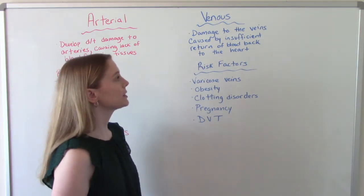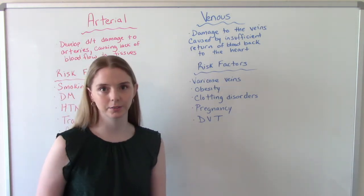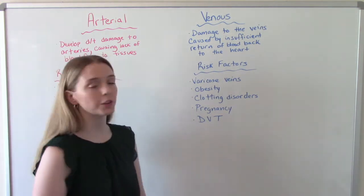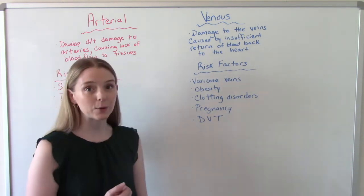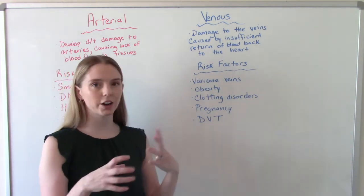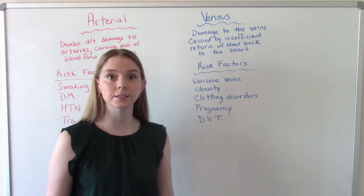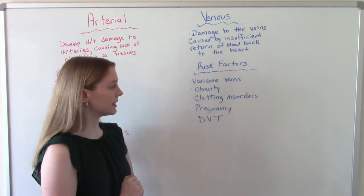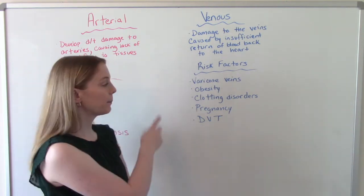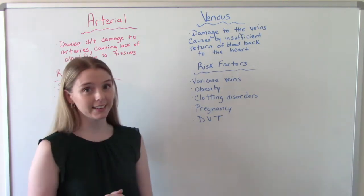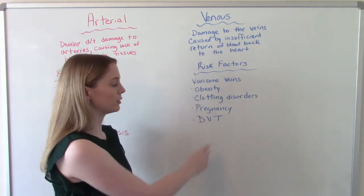On the flip side are venous ulcers. These occur in the veins — damage to the veins caused by insufficient return of blood back to the heart. Risk factors for a venous ulcer include varicose veins, which are those large tortuous veins we usually get in our lower extremities, obesity, having a clotting disorder, and pregnancy.